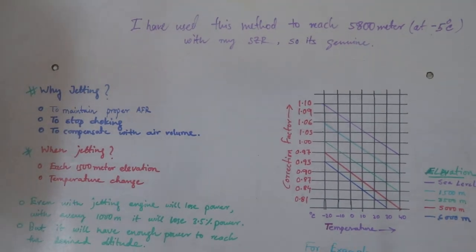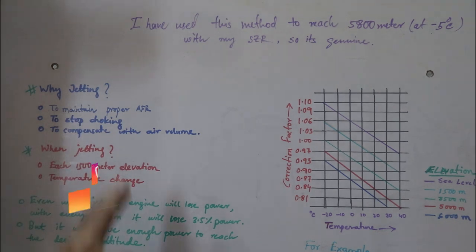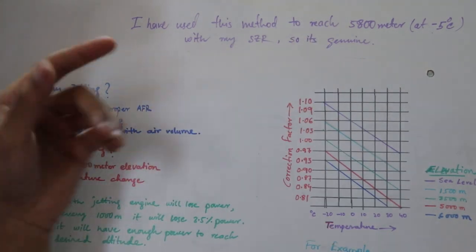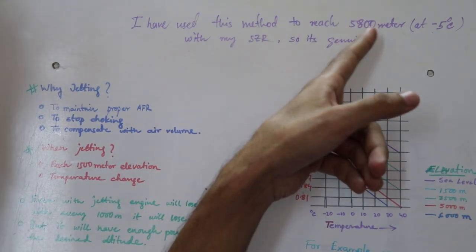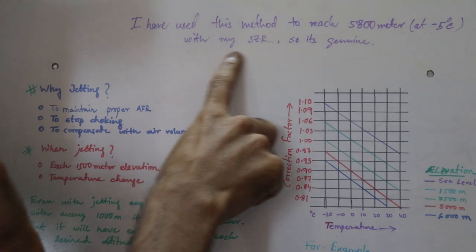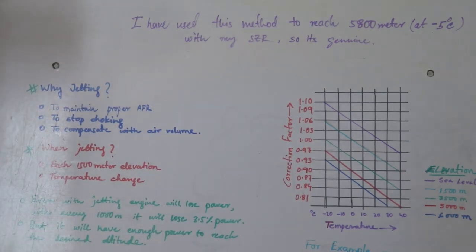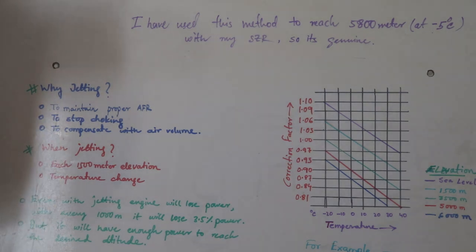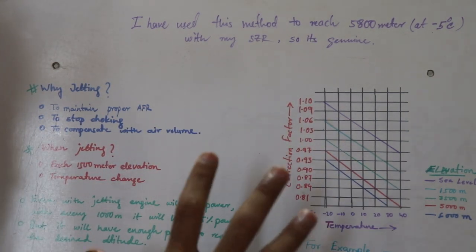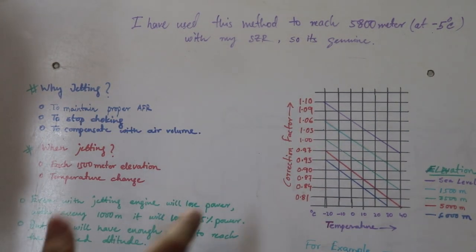Here you can see this is tried and tested by myself. I have reached 5,800 meters at minus 5 degrees centigrade with my Yamaha SZR in October 2019. So this is verified by me and this is not my theory or something, this is from Google and you can verify it from anywhere you want.